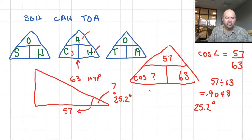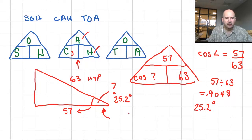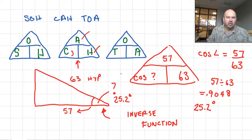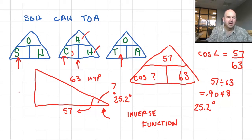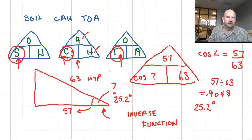You use shift cosine — the inverse function — when you don't know the angle. This applies to all trig functions: if it's the angle you're seeking, you use the inverse of whichever function you're using — inverse tangent, inverse cosine, or inverse sine. Shift cosine, shift sine, or shift tangent will find the angle.